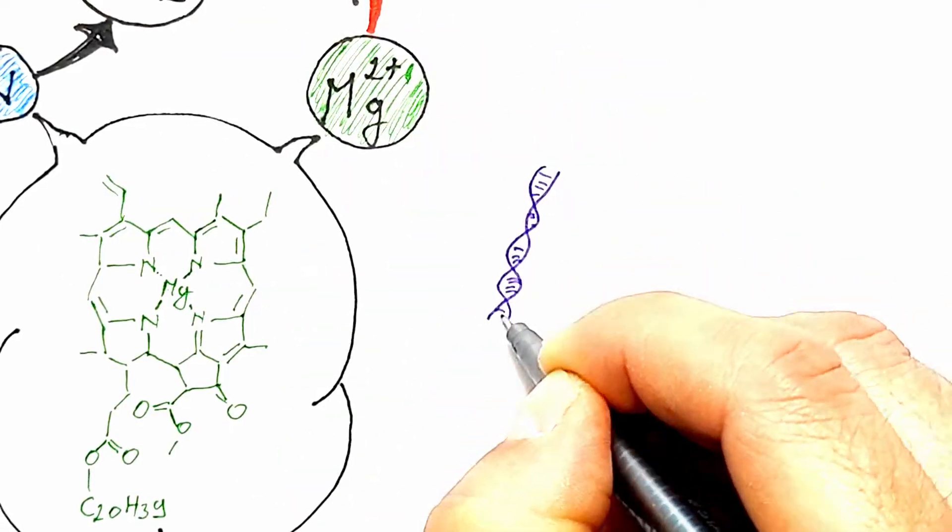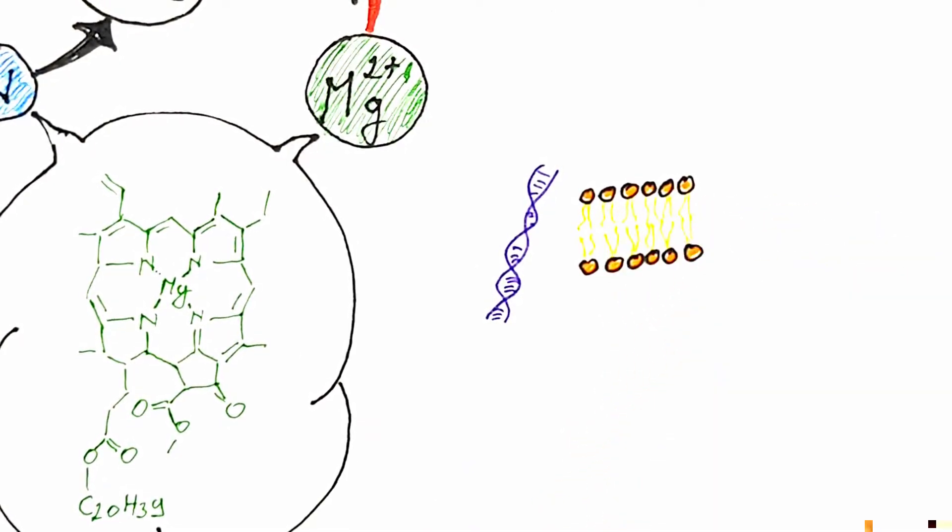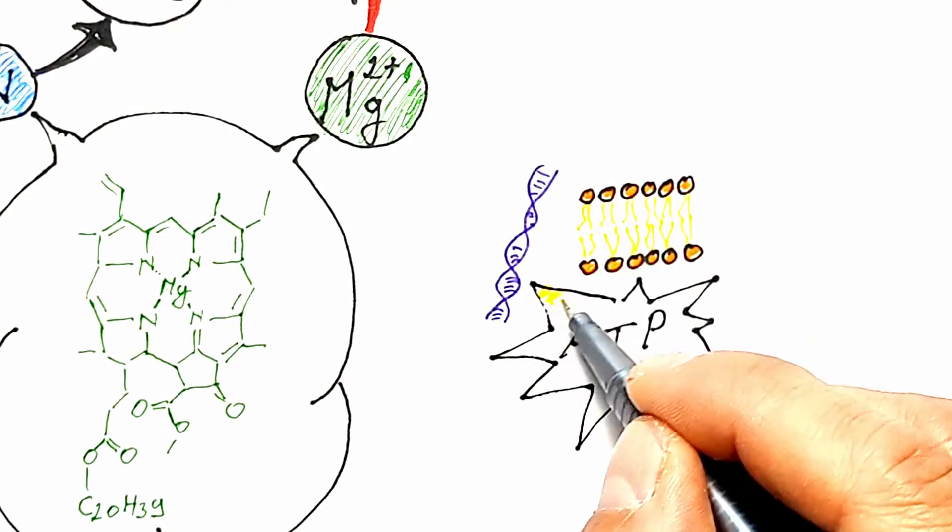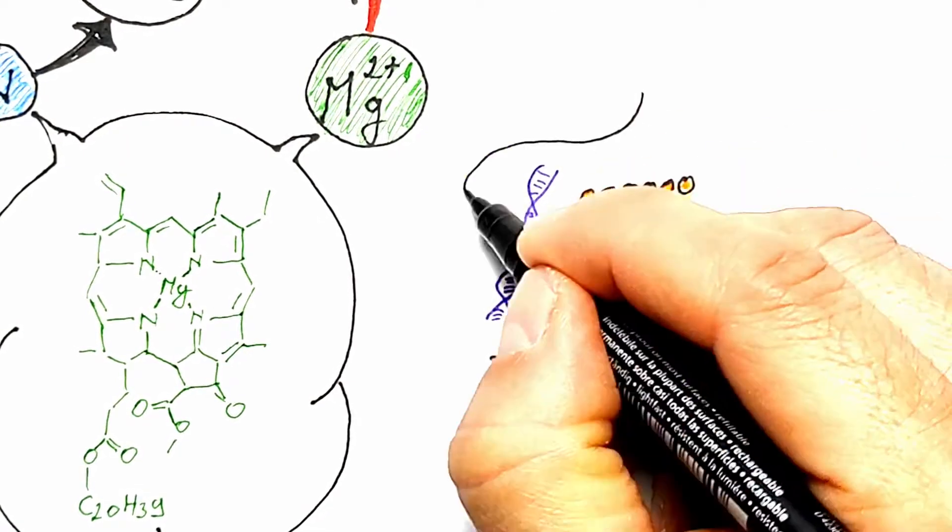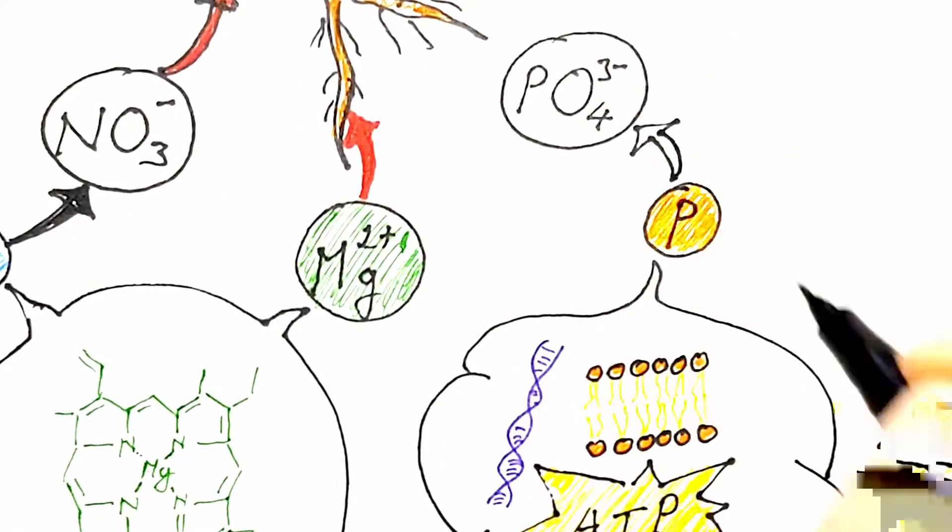For the production of nucleic acids, phospholipids, which are basic building components of cell membranes, as well as the already mentioned ATP molecules, plants need phosphorus, which they absorb in the form of phosphates.